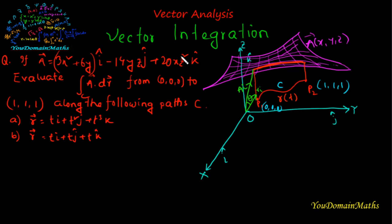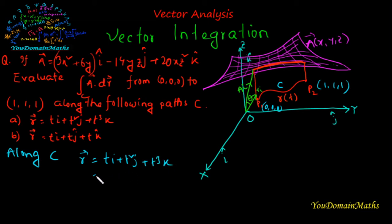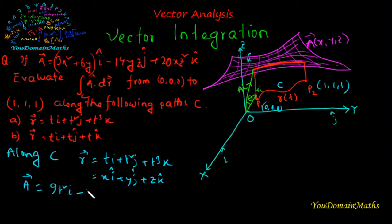Along path C, r = ti + t²j + t³k, which corresponds to xi + yj + zk. Comparing, we get x = t, y = t², and z = t³. Substituting these values into vector A, we get A = 9t²i − 14t⁵j + 20t⁷k.